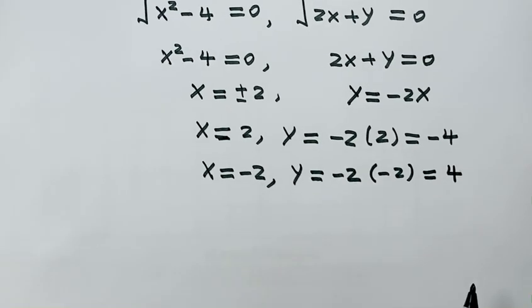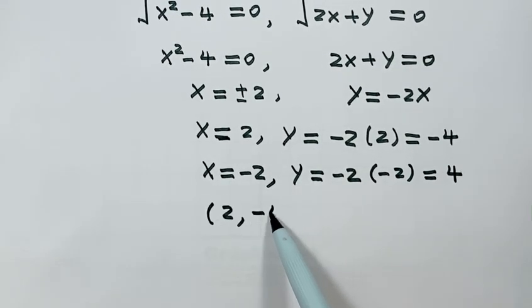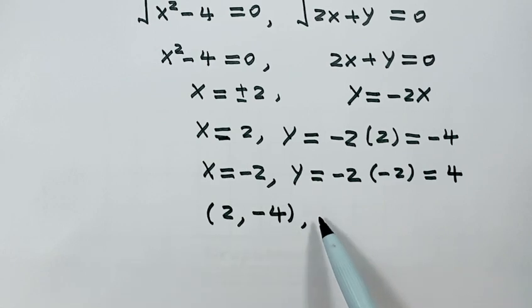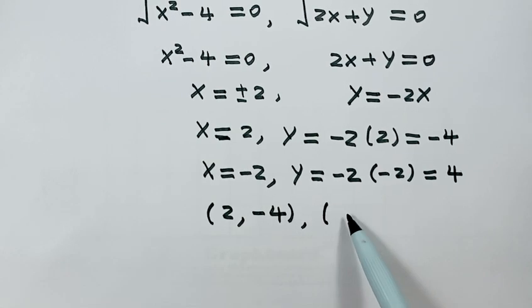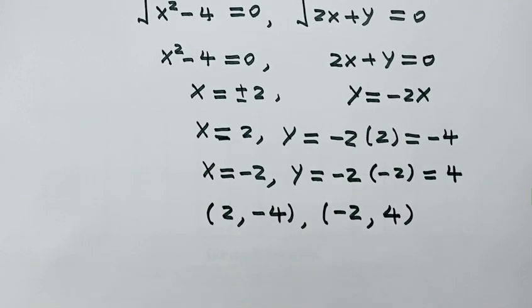So we have two solutions: x equals 2 and y equals negative 4, or x equals negative 2 and y equals 4. These are the solutions of this equation. Thanks for watching. See you next time.